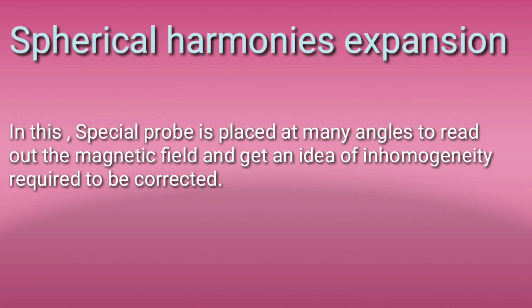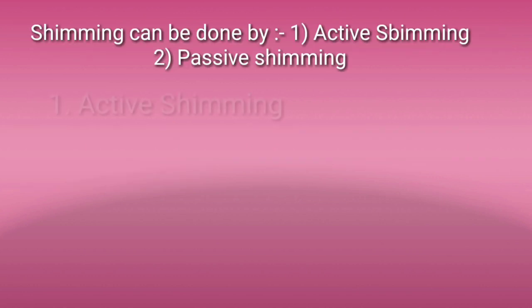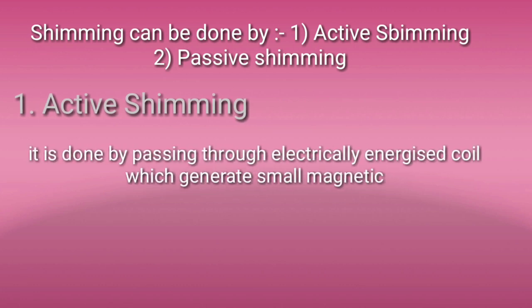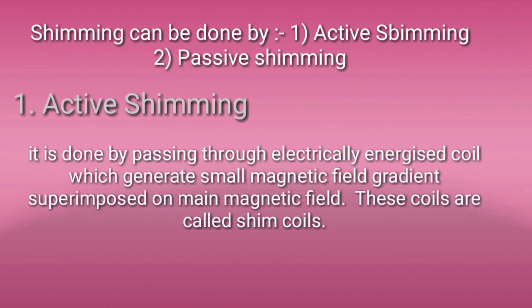To correct the inhomogeneity, there are two types of shimming: active shimming and passive shimming. In active shimming, electrically energized coils are used to correct and maintain the main magnetic field.